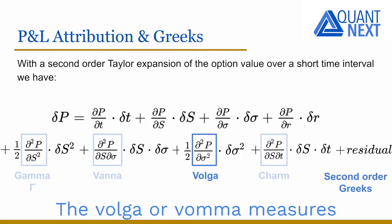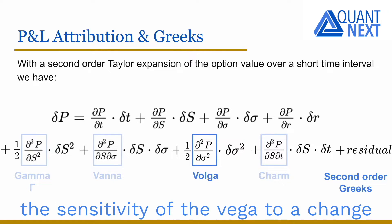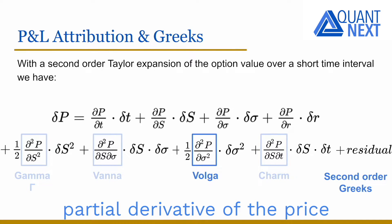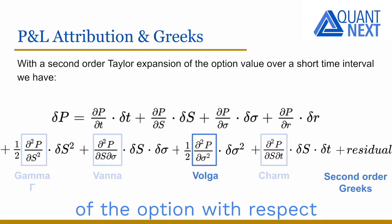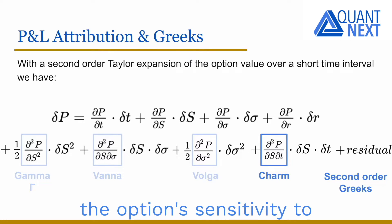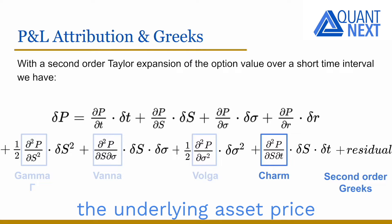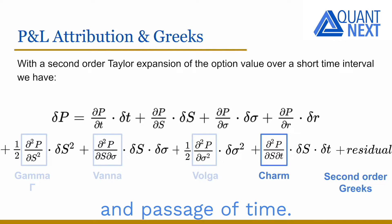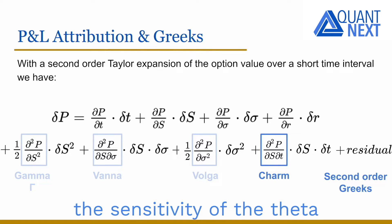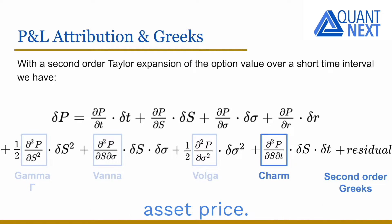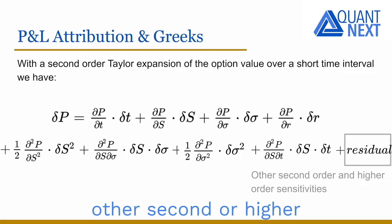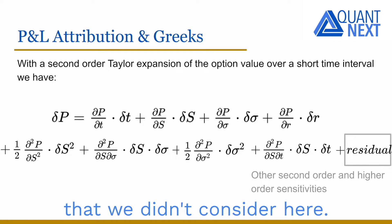The Volga measures the sensitivity of the vega to a change in the implied volatility. It is the second order partial derivative of the price of the option with respect to the implied volatility. The charm is the option's sensitivity to small changes in the underlying asset price and passage of time. It is also the sensitivity of the delta to the passage of time, or the sensitivity of the theta to changes in the underlying asset price. The residual regroups other second or higher order sensitivities not considered here.